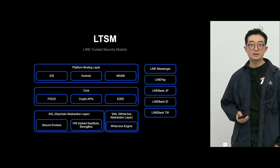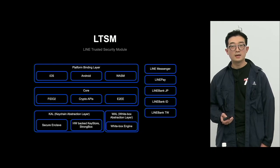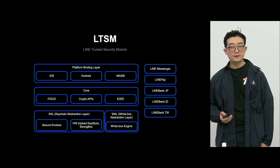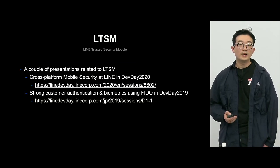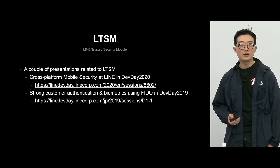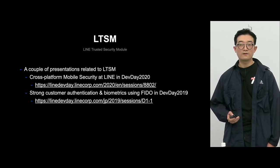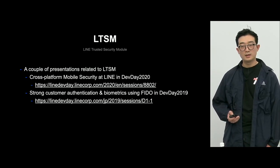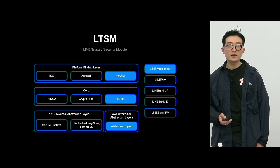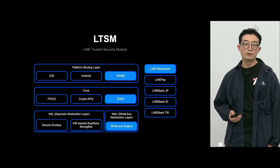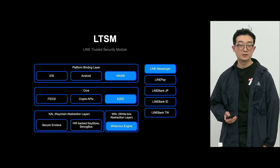That's why we developed these features inside our security module, ATSM — LINE Trusted Security Module. It is a client-side security module supporting iOS, Android, and now a WebAssembly module as well. ATSM is used in LINE Messenger, LINE Pay, and LINE Vans for file authentication and data encryption. We had presentations related to ATSM at LINE Dev Day 2019 and 2020 covering file authentication and cross-platform support in mobile. Today I'll focus on the ATSM WebAssembly module based on White Box Cryptography and WebAssembly, and its use cases in the LINE Messenger Chrome extension.